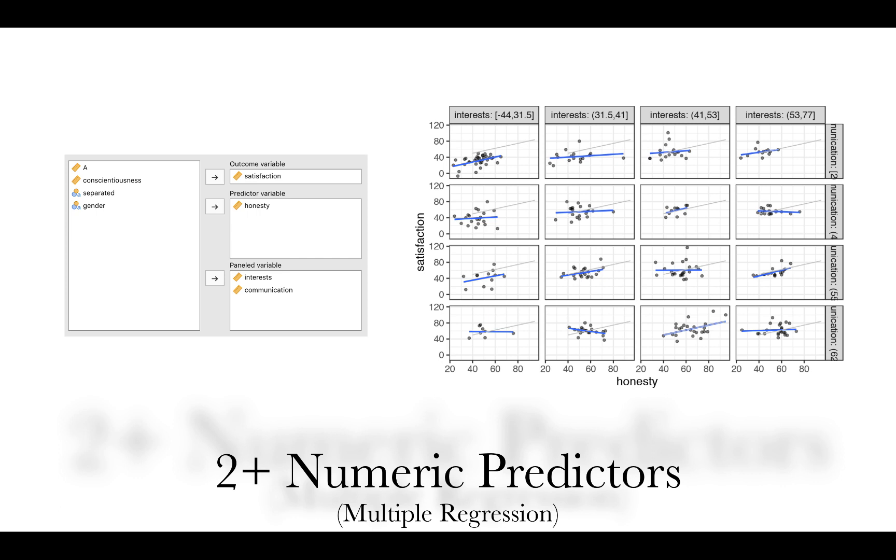Or if you're going to do a multiple regression, again Flexplot is smart enough to know how to display the information. Now granted this is a lot of information at once, and as we talk about the heuristics, we're going to show you different strategies we can use to make this easier to interpret. But Flexplot, in this case, is paneling both on interests in the columns and on communication in the rows. So notice that with each of these graphics, the user only needs to specify the outcome, and the predictors, and sometimes the paneling. And then the software does the rest.